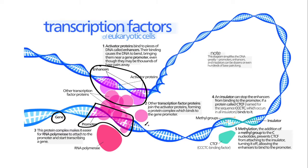For a gene to be expressed, it requires the interaction of all these different molecules that are responding to the environment of the cell. For example, one of these activator proteins might be triggered by the transcription of one gene, which then gets translated into that protein. If that happens a lot, you can get more of these activator proteins, which will then promote the transcription of another gene.